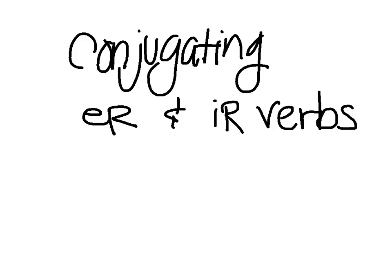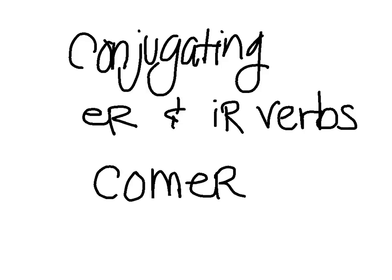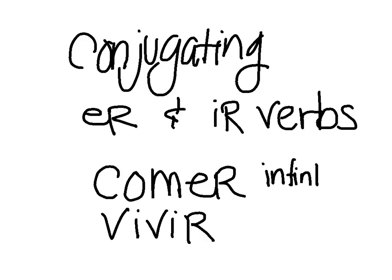So we've been working with our verbs before. Remember when we look at a verb — for example, the verb comer or vivir, which will be two of the ones we're working with today — these two verbs are in what's called the infinitive form. The infinitive form simply means the unchanged form, right? It's the form that still ends in ER, or still ends in IR. It's the one that hasn't been changed at all.